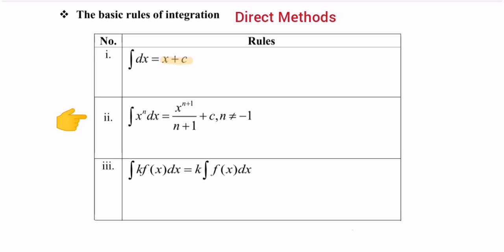For rule number two, if we integrate x to the power of n with respect to x, we obtain x to the power of n plus one, over n plus one, plus c. Note that n cannot be equal to negative one.